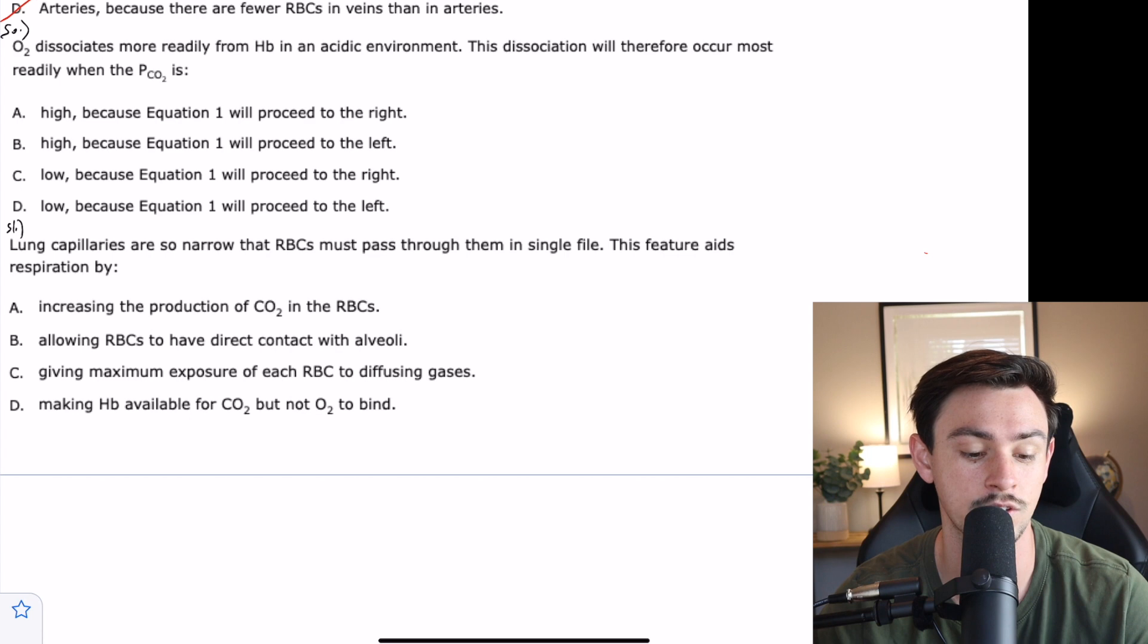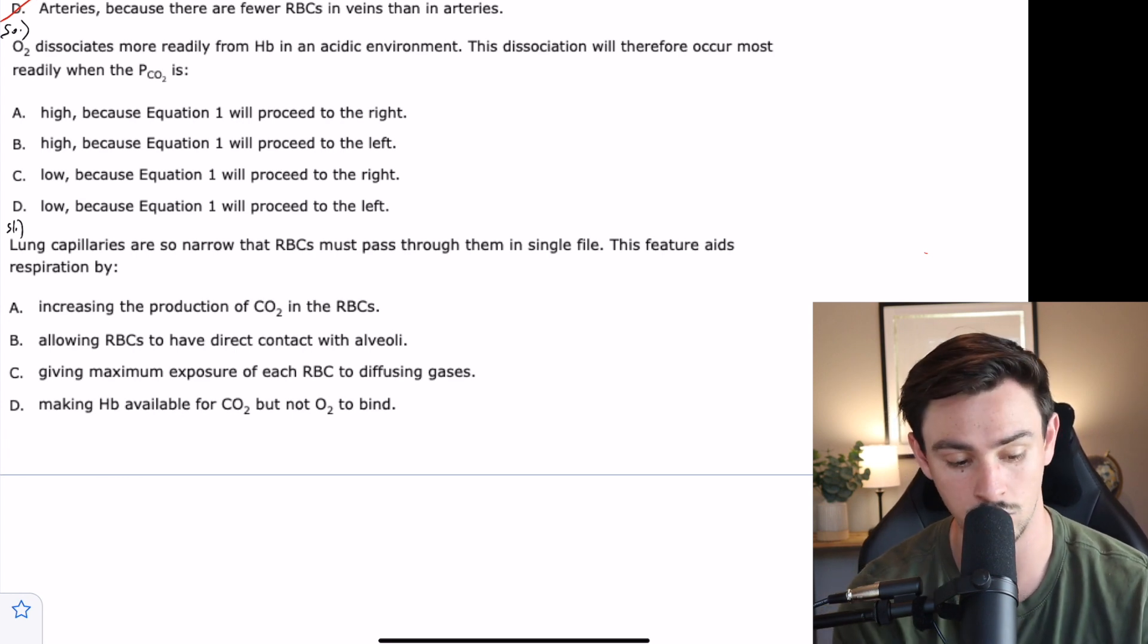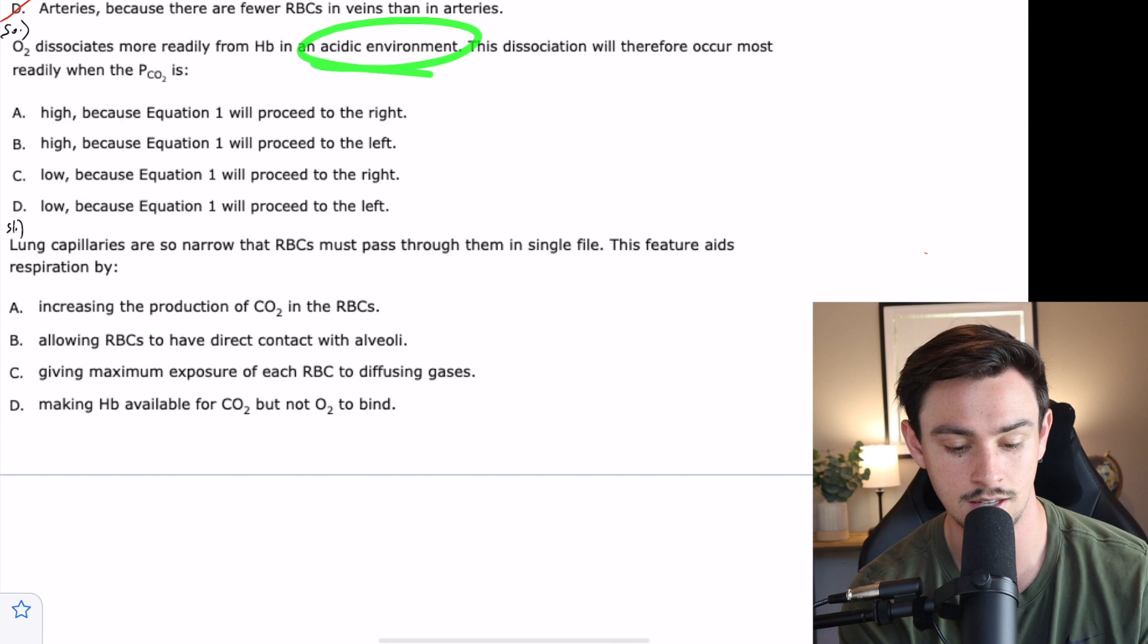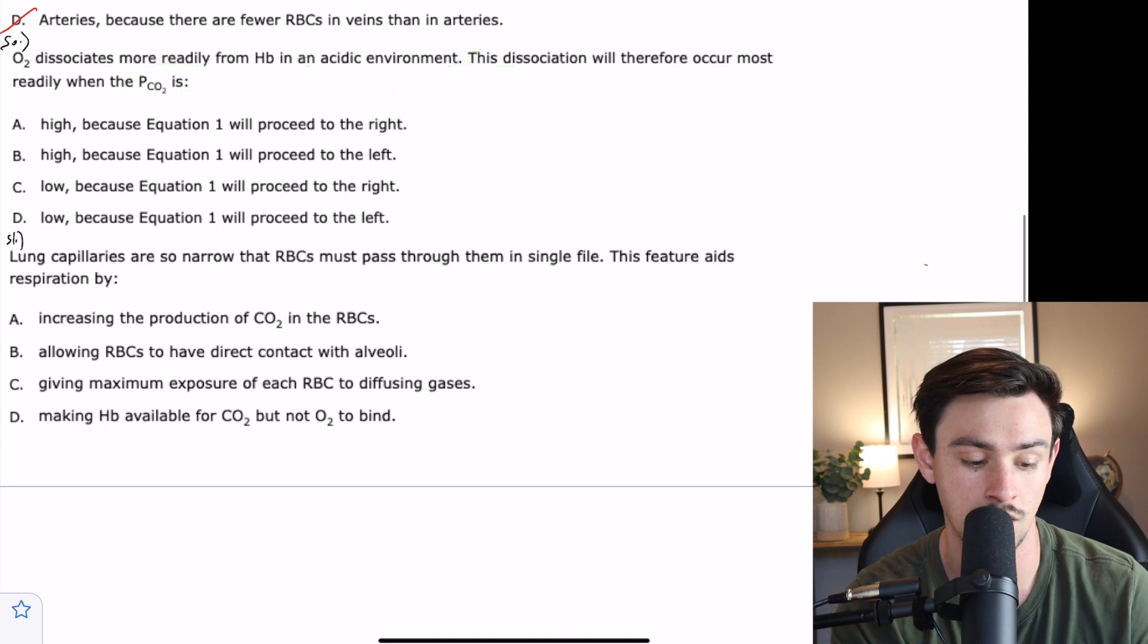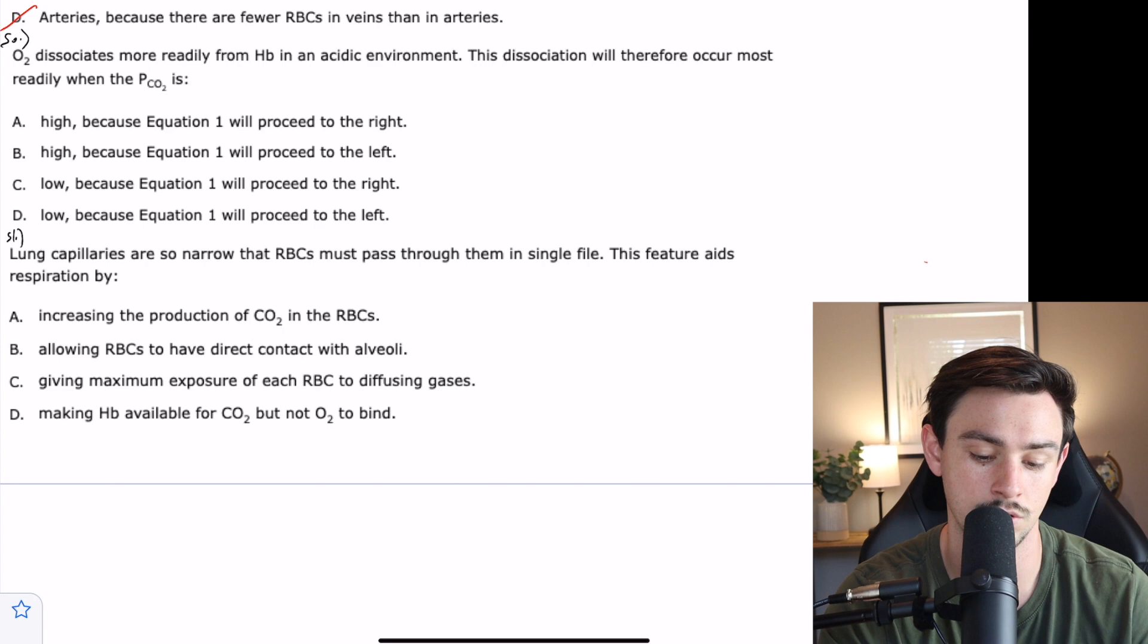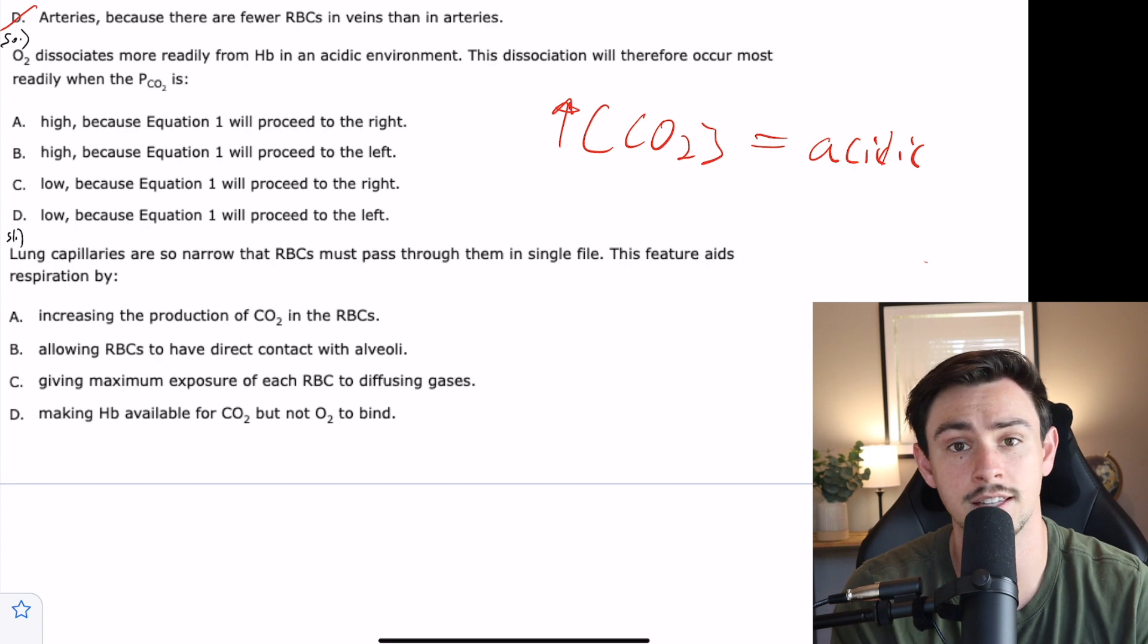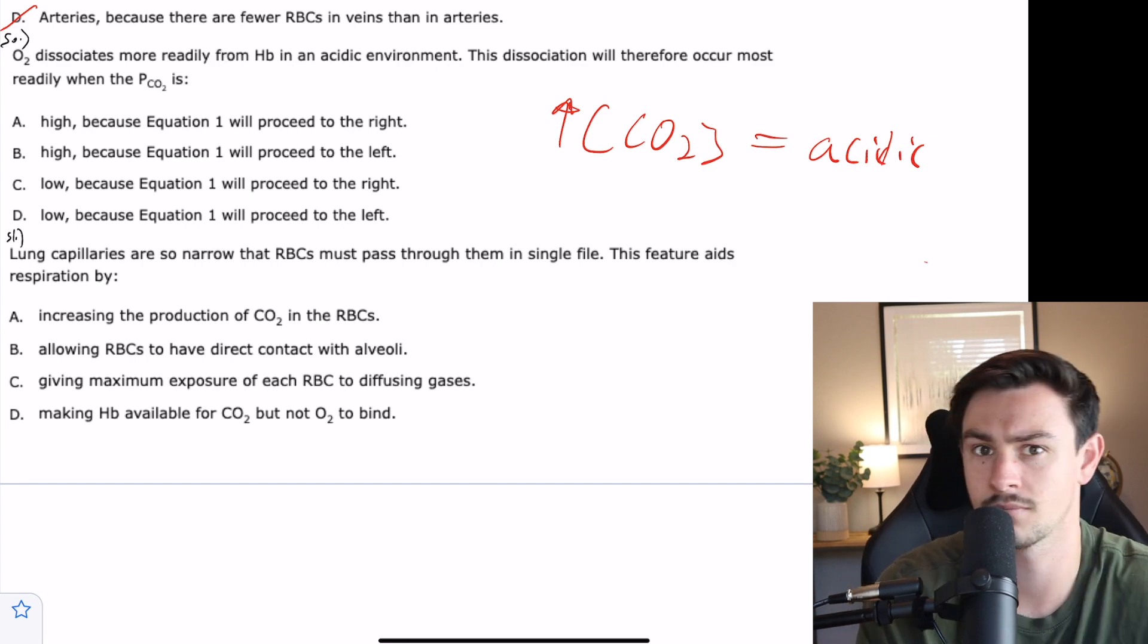Number 50 says oxygen dissociates more readily from hemoglobin in an acidic environment. This dissociation will occur most readily when the PCO2 is what? That's essentially asking, what do I need to do with PCO2 to have an acidic environment? High concentrations of PCO2 leads to acidic environments. If you were to hold your breath indefinitely, all that CO2 would build up and you would get an acidic environment inside of your blood.